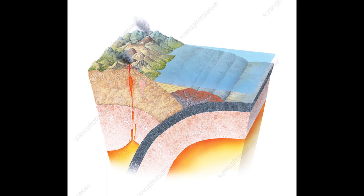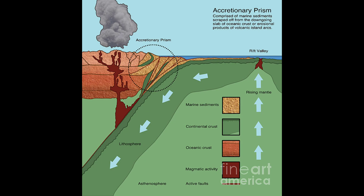The fronts or toes of accretionary wedges are also characterized by material slumping off of the steep slope of the wedge into the trench. This material can then be recycled back into the accretionary wedge to form even more complex structures.